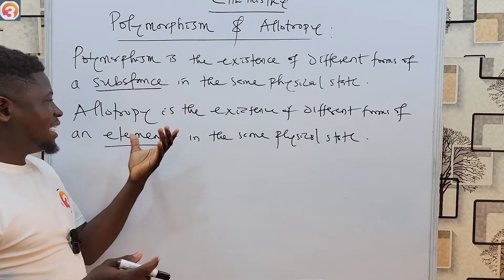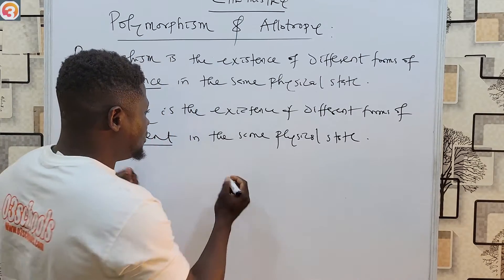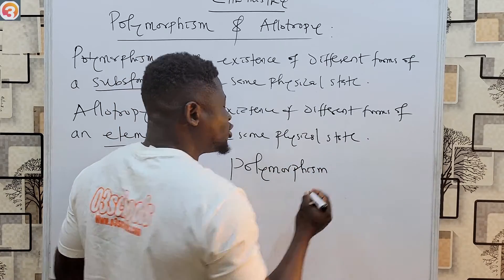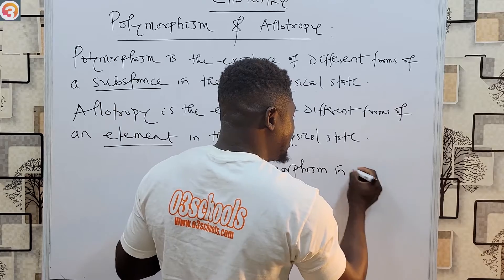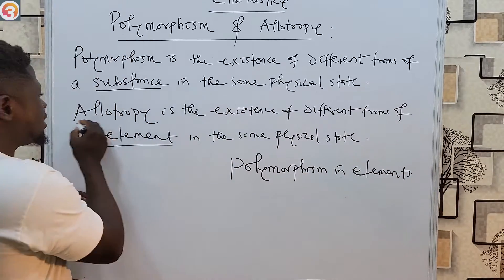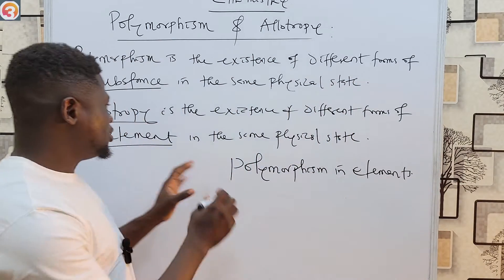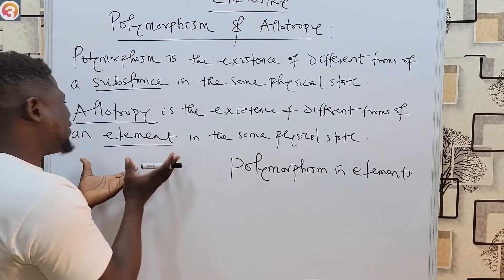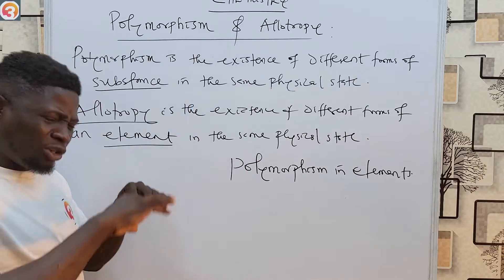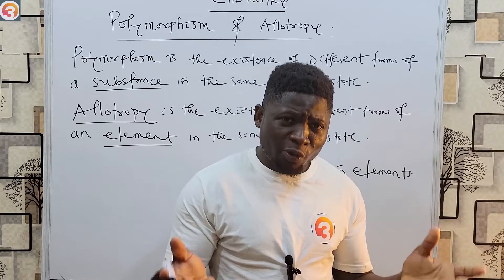You can encounter a question asking: polymorphism that occurs in elements is what? The simple answer is allotropy. Allotropy is a form of polymorphism because it talks about different forms of an element in the same physical state, while polymorphism more broadly refers to a substance.